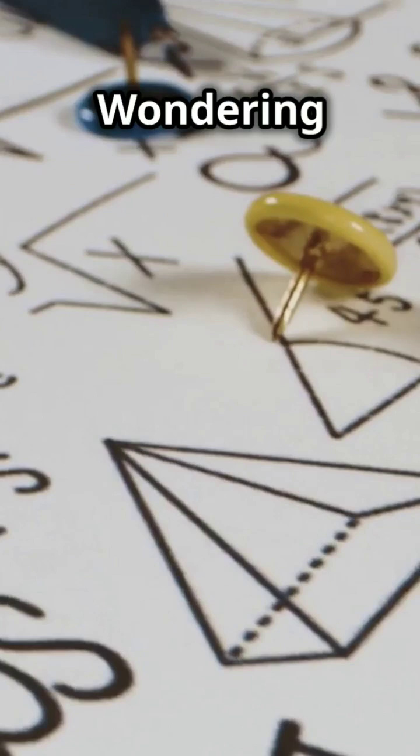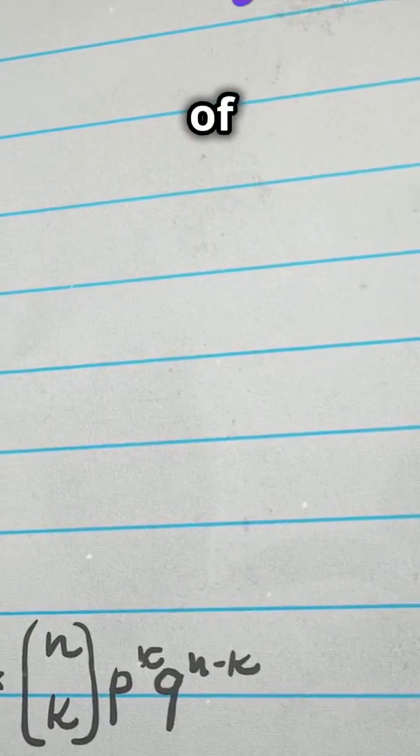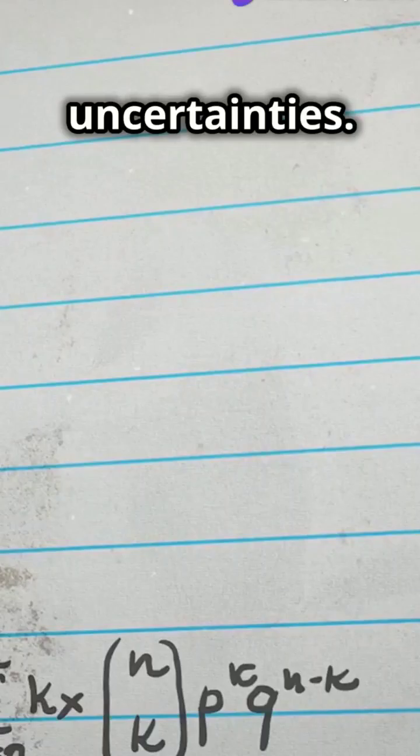Wondering about combined uncertainty? Use the formula: the square root of the sum of squared uncertainties. Calculate it by plugging in your values.